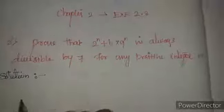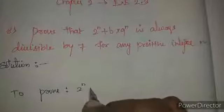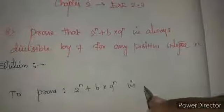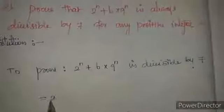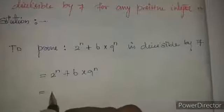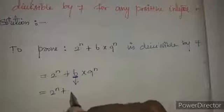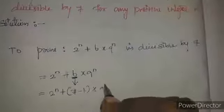To prove 2^n + 6·9^n is divisible by 7, we rewrite the constant 6 as (7 minus 1), since 7 minus 1 equals 6. So we have 2^n plus (7 minus 1) into 9^n.